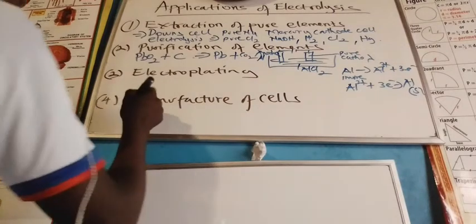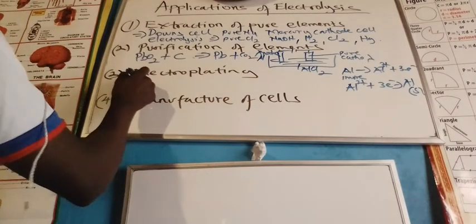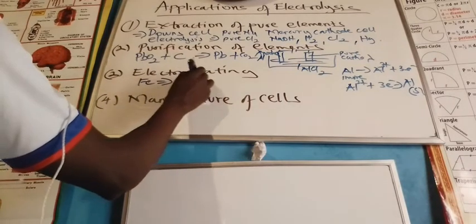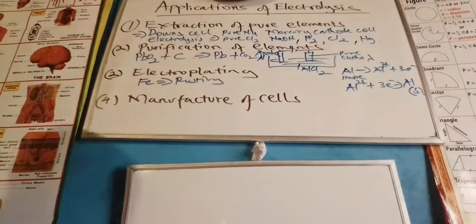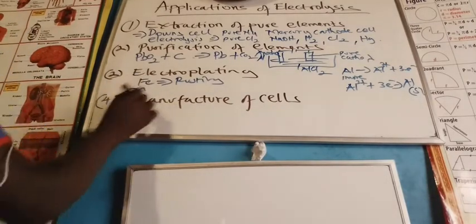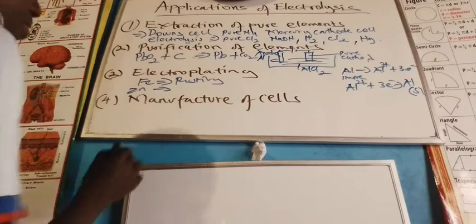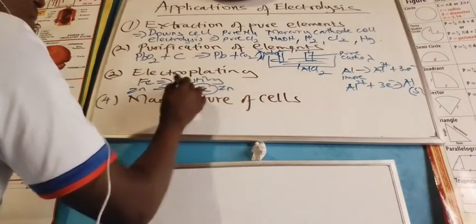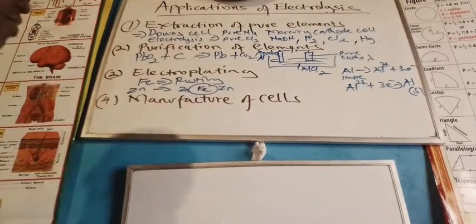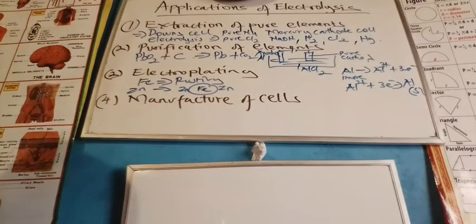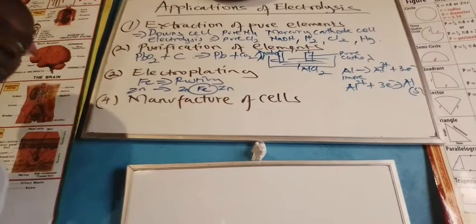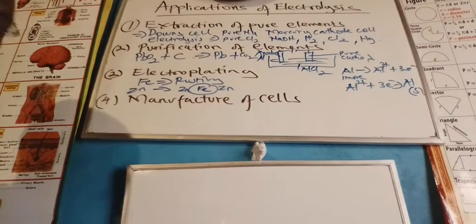For example, we know that iron is susceptible to rusting. Now, we could choose an element such as zinc and use zinc to electroplate iron. And in a nutshell, when zinc has electroplated iron, the net result is that zinc is more reactive than iron. And whenever there is a chance for rusting to occur, it is zinc which will be oxidized or corroded and the iron remains protected.